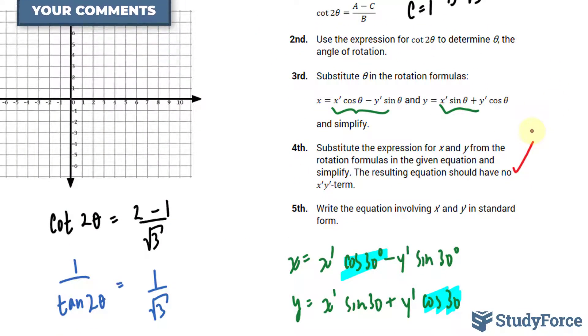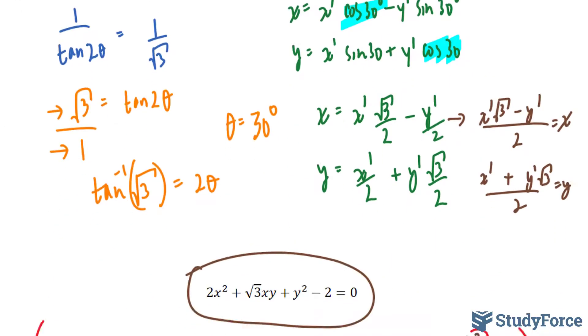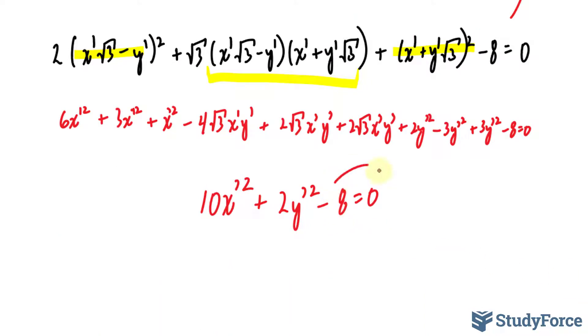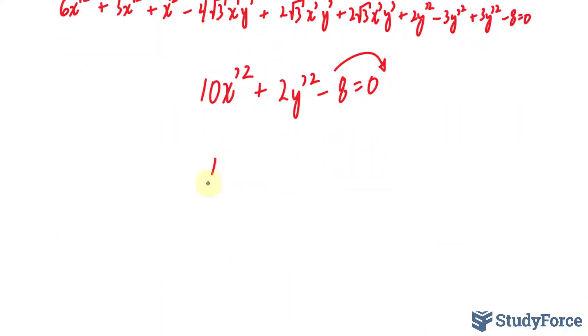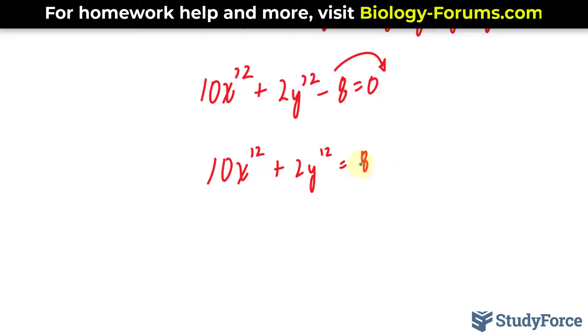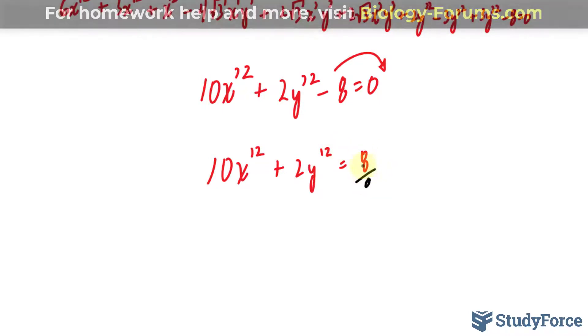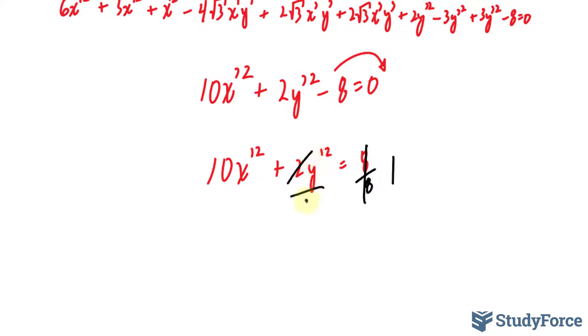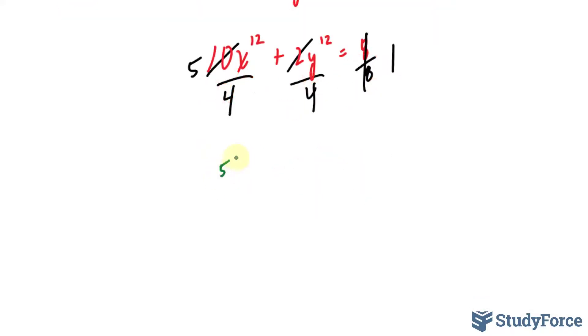In step number 5, we have to write the equation involving x prime and y prime in standard form. To do that, we will take this 8 over to the other side. And we have 10x prime squared plus 2y prime squared is equal to positive 8. So to put this equation into standard form, we want to make sure that this 8 is equal to 1. I'll divide everything by 8. That makes this 1. Here we have over 4. And here we have 10 over 8, which is equal to 5 over 4. So now we have 5x prime squared over 4 plus y prime squared over 4 is equal to 1.